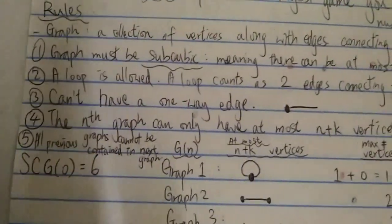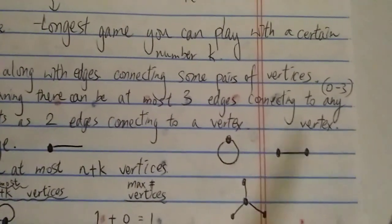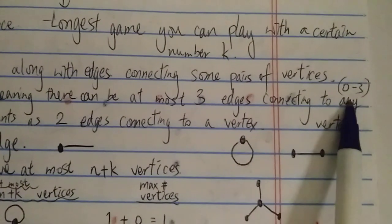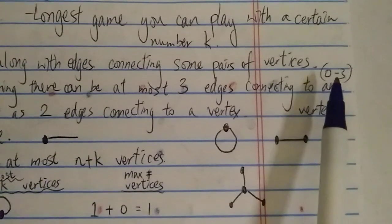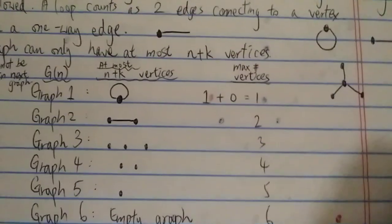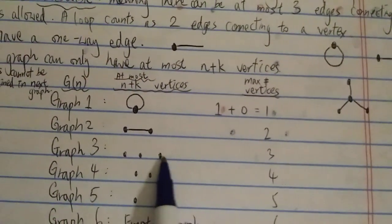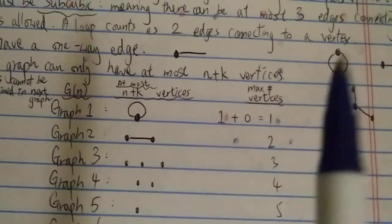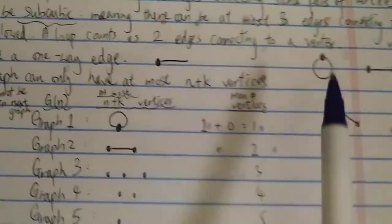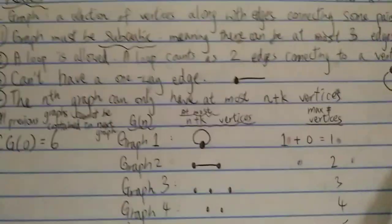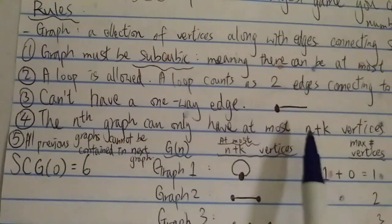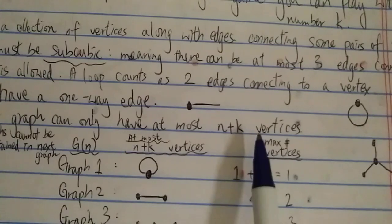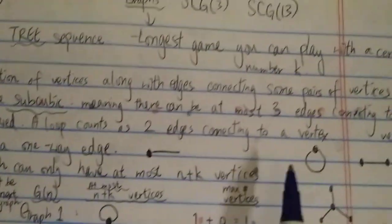Following up on the 'at most three edges' rule: the number of edges you can have is zero to three. That means you can have vertices only without any edge — that is allowed, because the maximum is three and zero is within that range. Anyway, the fourth rule is that the nth graph can only have at most n plus k number of vertices.